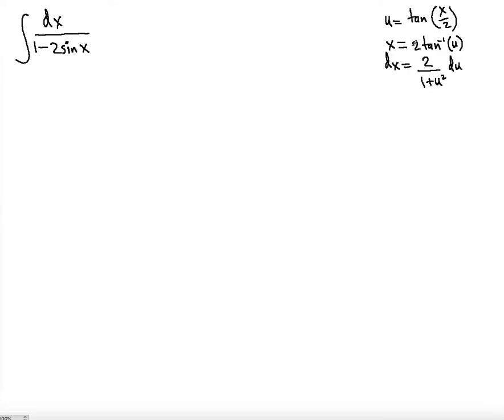The 2 is taken outside — you don't differentiate it — but the derivative of the arctan gives 2 divided by (1 plus u squared) du.